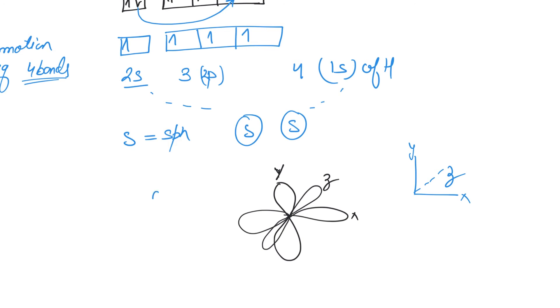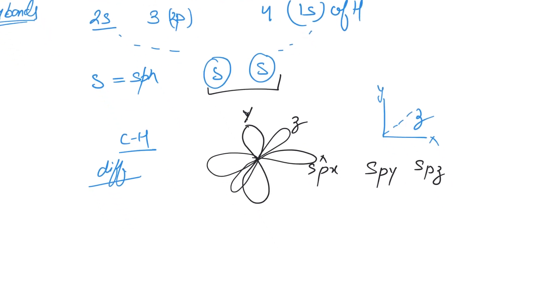That means the four bonds, the CH bonds we're talking about, are going to be different if the overlap is between s and s, then s and pₓ, s and pᵧ, s and pᵧ—they'll be very different from each other. But as it happens, that's not the case. Experimentally, all four CH bonds in CH₄ are identical.